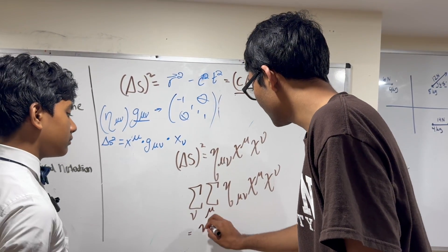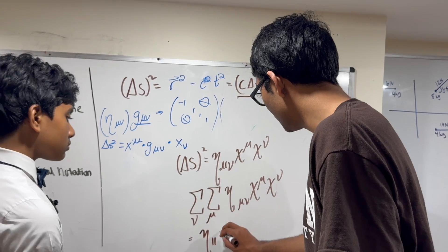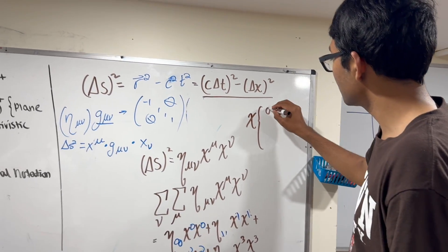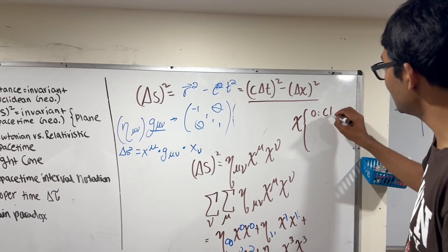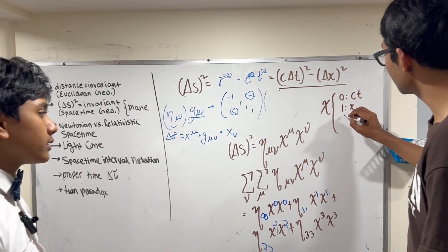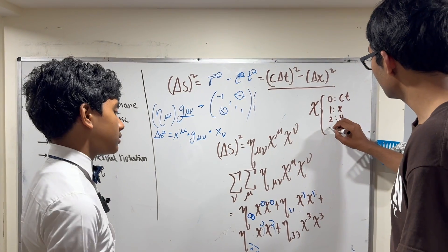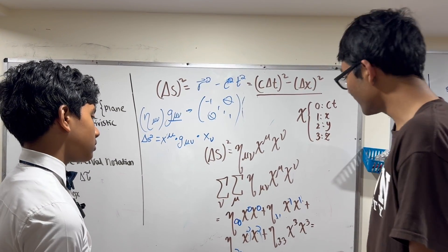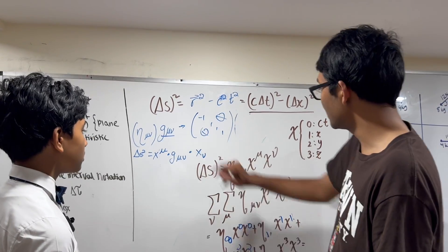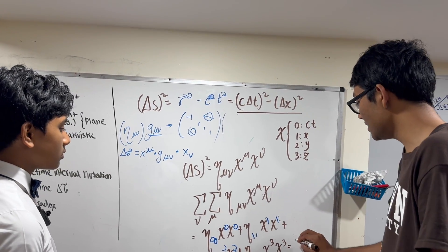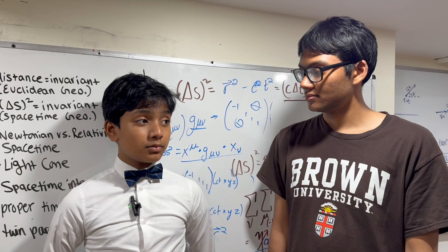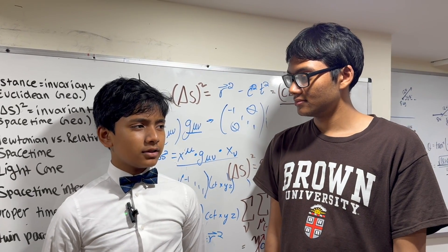And if you remember what the first element is, it's ct. Second element is x. Third is y. Fourth is z. So what does that give us? Eta 0,0 is minus 1. So we have minus 1. Why don't I write it over here? Tomorrow we're going to talk about Wilhelm's transformation.